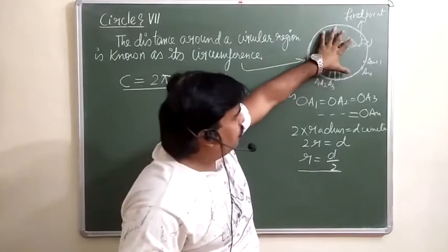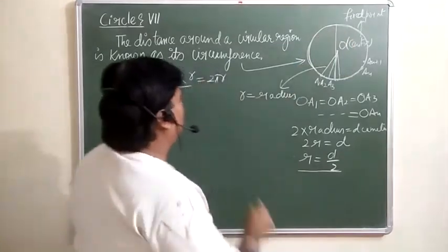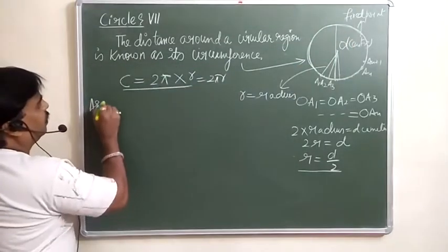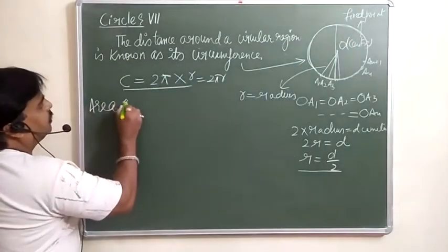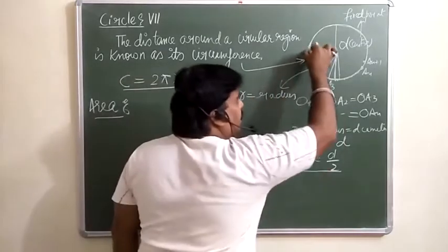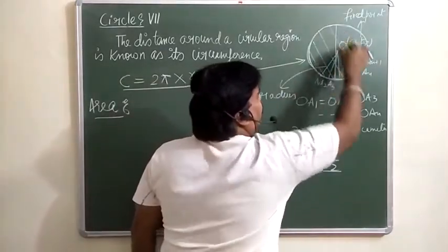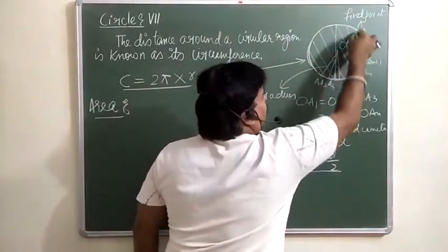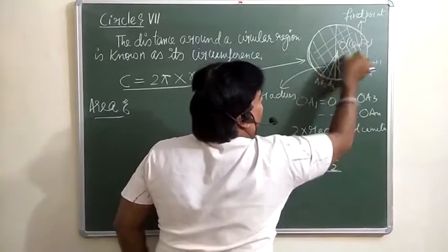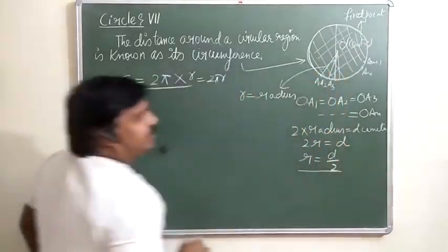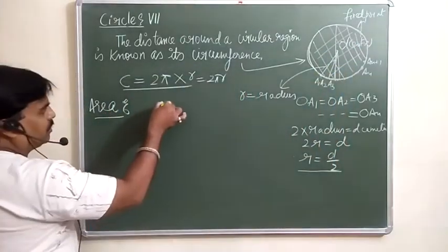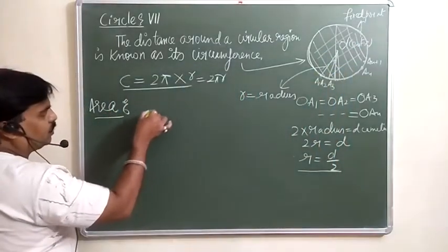Now if we talk about the area of the circle — area means the region which is enclosed by the circumference. This region will be the area of the circle.